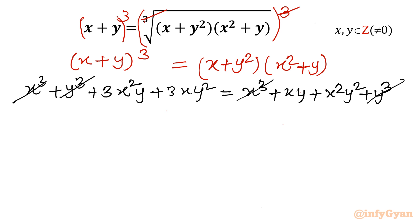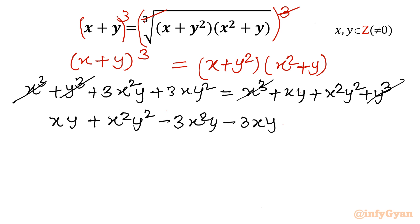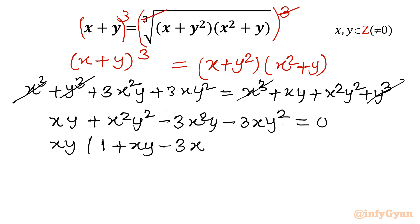Take all terms to one side — let's move everything to the RHS. We get xy + x²y² − 3x²y − 3xy² = 0. Now take xy as a common factor, giving xy(1 + xy − 3x − 3y) = 0.